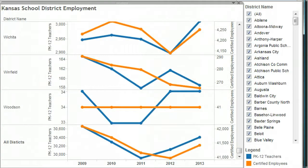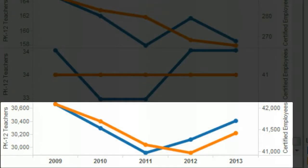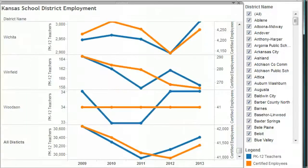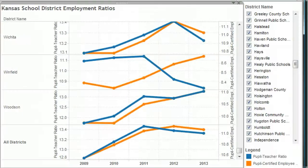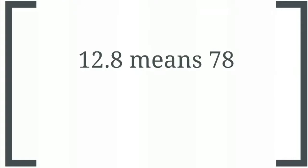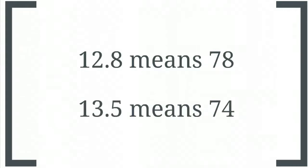So what does the data tell us? Looking at all school districts, we can see that the number of these employees had been declining but is now rising. Teachers are shown in blue and the other line is all certified employees. If we look at ratios of these employees to the number of students, we see that for the entire state the ratios had been rising, meaning more students for each teacher and certified employee. But now the ratios are falling. A student-teacher ratio of 12.8 means there are 78 teachers for every 1,000 students. When that ratio rose to its highest value of 13.5, that meant 74 teachers instead of 78 for every 1,000 students. So these changes are relatively small.